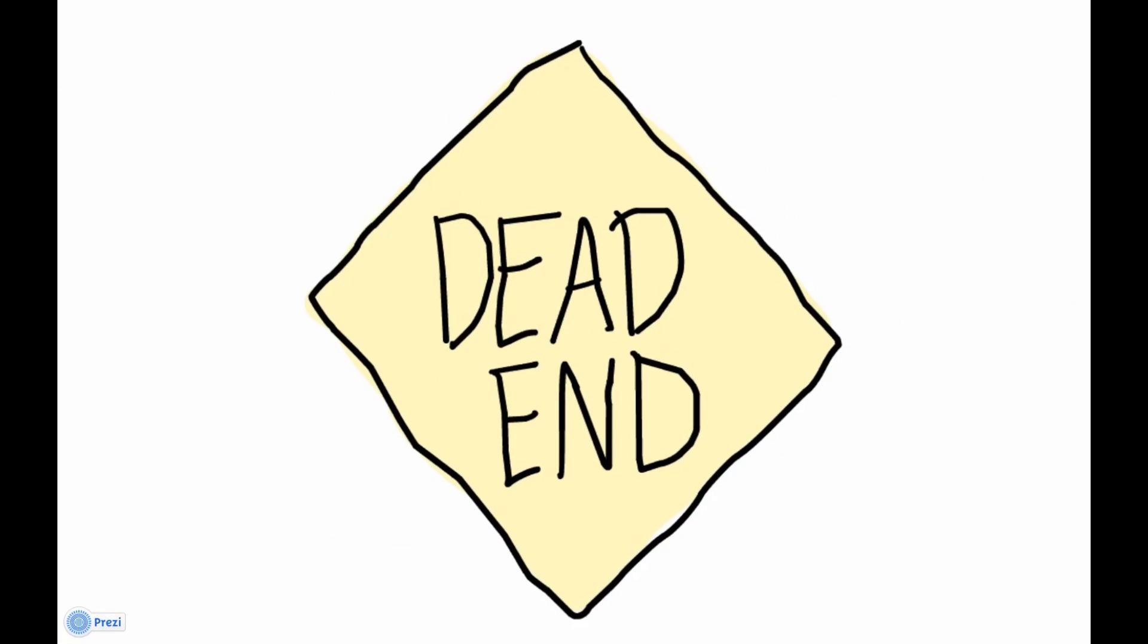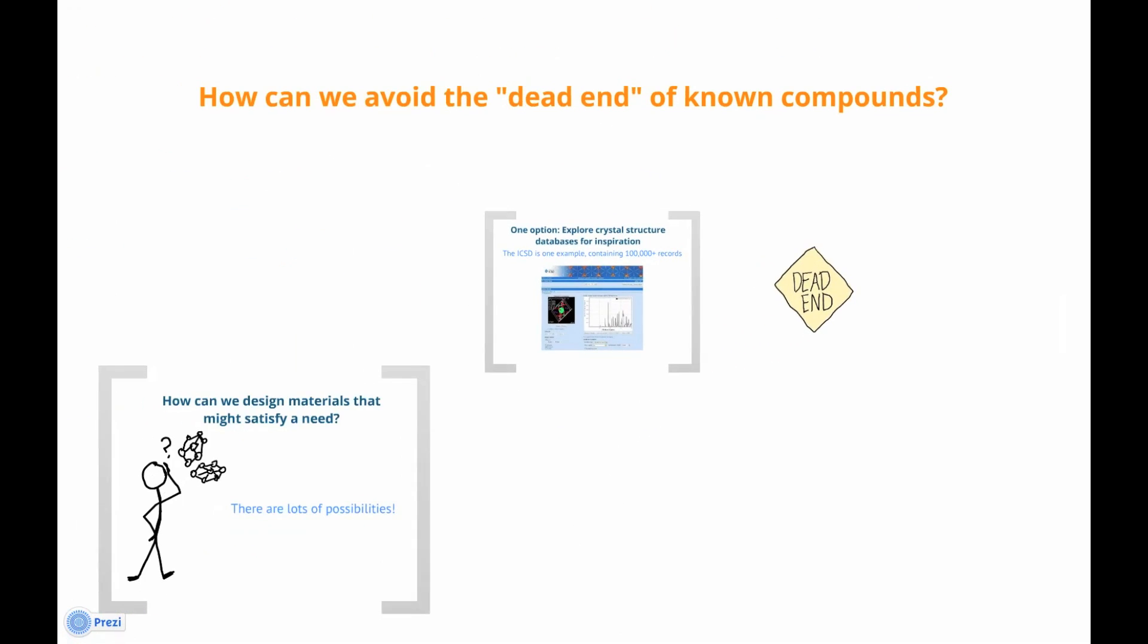However, with database search, we often hit a dead end. All the compounds are either already studied or are not interesting based on chemical arguments. So how can we avoid the dead end of known compounds?